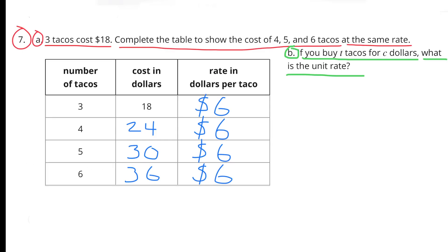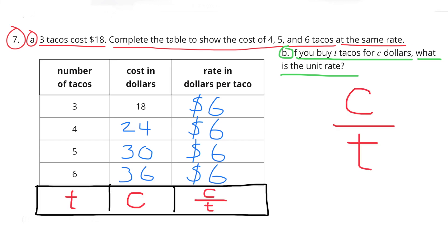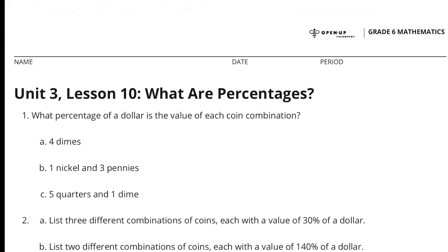B. If you buy T number of tacos for C dollars, what is the unit rate? 18 ÷ 3 gives the unit rate, so the cost in dollars divided by the number of tacos gives the unit rate. The unit rate is C ÷ T, or C over T, since C/T represents C divided by T. Congratulations! You have completed Unit 3, Lesson 10: What Are Percentages?